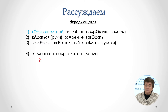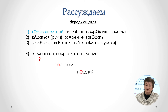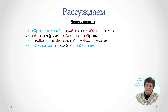Четвёртая строка вызывает вопрос: первое слово «компаньон» — словарное. Одно слово с чередующейся гласной, зависящей от согласного в корне, и слово с проверяемой гласной, которое необходимо проверить. Таким образом, данный ряд не может быть ответом.